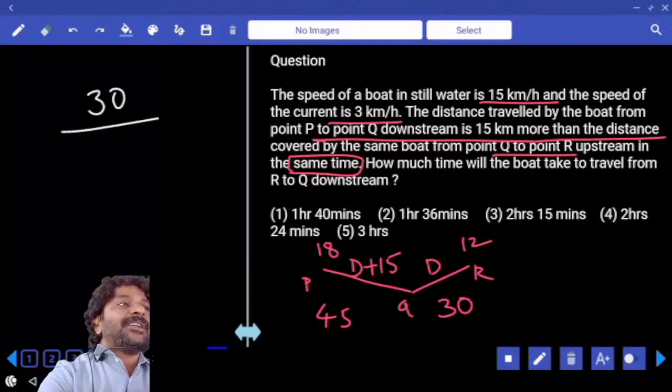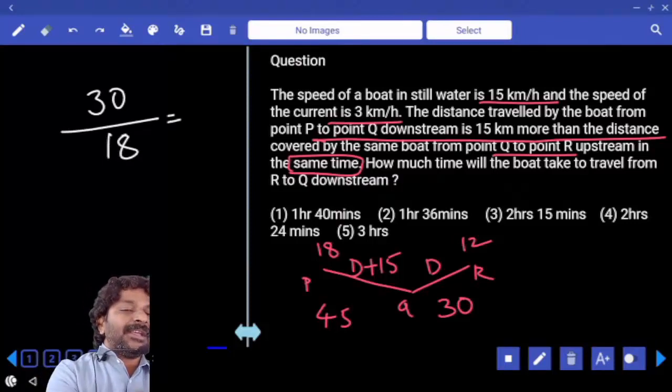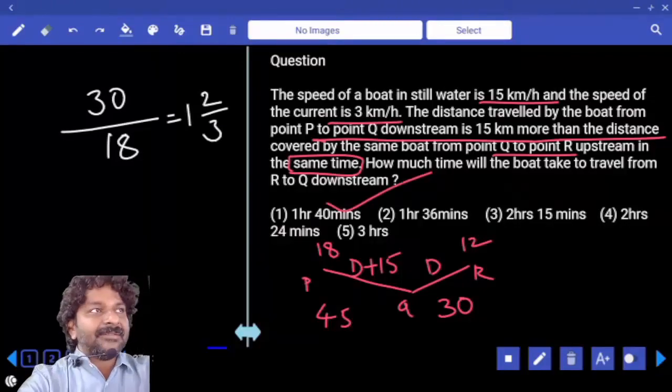And these 30 kilometers if traveled downstream at 18 km per hour, time taken is 5 by 3, which is 1 and 2 by 3 hours. 1 hour 40 minutes is the final answer.